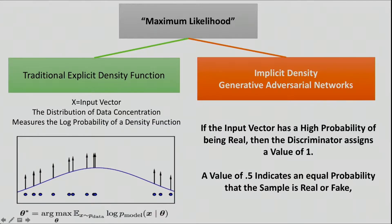This is a typical maximum likelihood problem. Traditionally, you would use an explicit density function where, if X is the input vector, the distribution of data concentration measures the log probability of a density function. But here in GANs, we're using an implicit density function. So if the input vector has a high probability of being real, the discriminator assigns a value of one — those are keepers, very accurate in terms of their attributes. A value of 0.5, for example, would be an image that you would throw out — it doesn't really match the original very well.